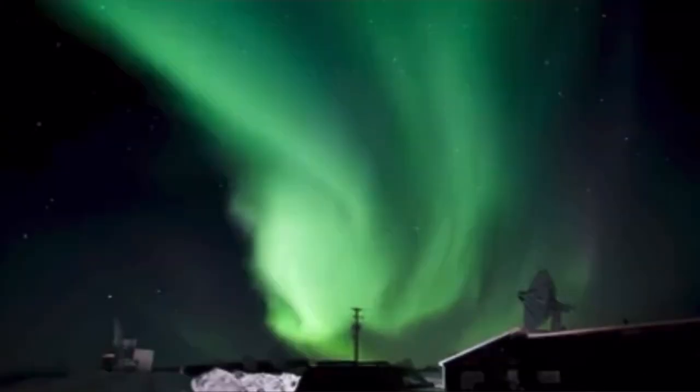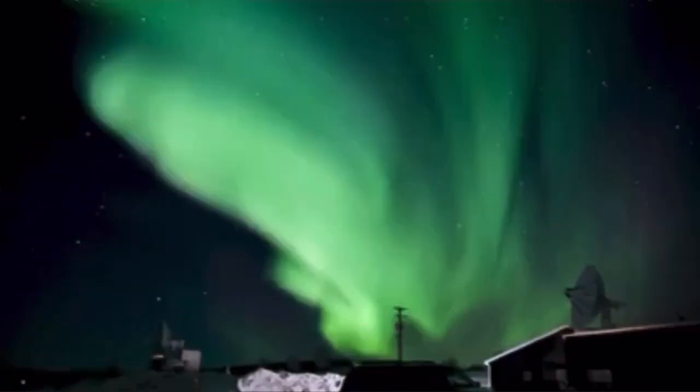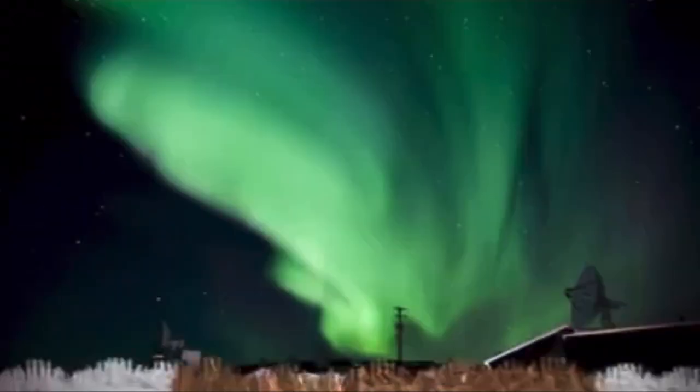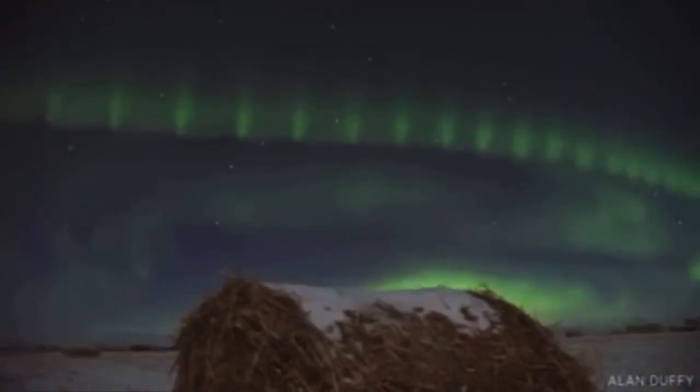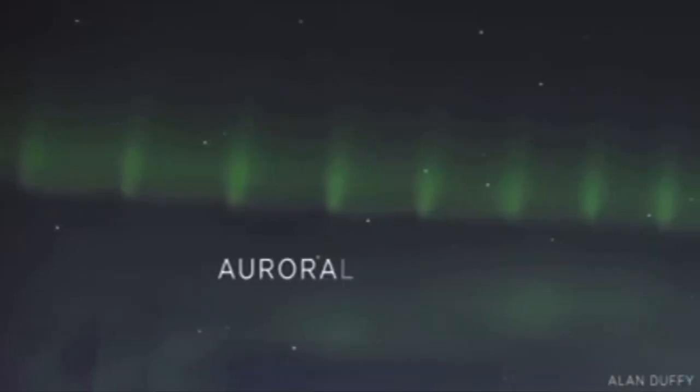Right before auroras dance in the sky, there's often an appearance of a mysterious shape. It drapes across the sky like a glowing pearl necklace. Scientists call them auroral beads.